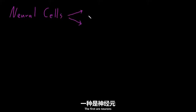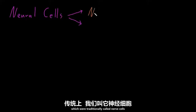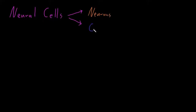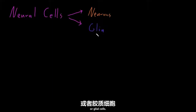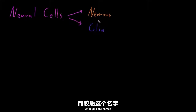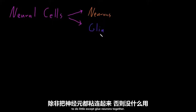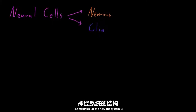Neural cells are divided into two big categories. The first are neurons, which were traditionally called nerve cells, and the second are glia, also called neuroglia or glial cells. Neurons are named from a Greek word for nerve, while glia are named from a Greek word for glue, because they were once thought to do little except glue neurons together.